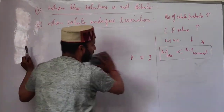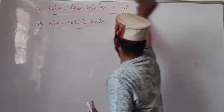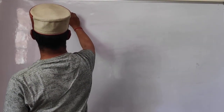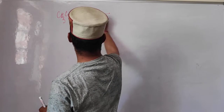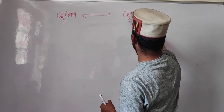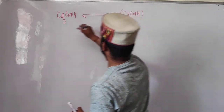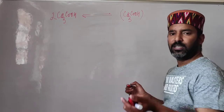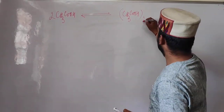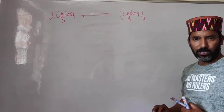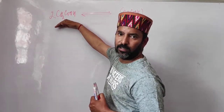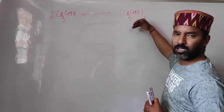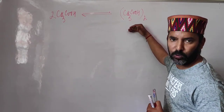The third reason for getting abnormal molecular mass is when the solute undergoes association. For example, carboxylic acids in benzene undergo dimerization — two molecules of acetic acid associate to form a dimer, which is a single larger molecule. So however many solute particles we originally had, they all dimerize, giving us half the number of solute particles in the solution.